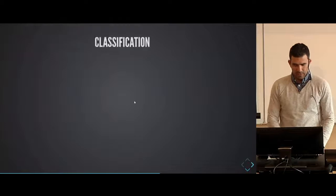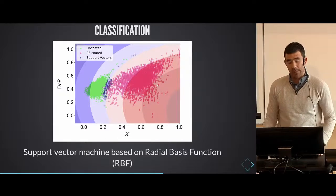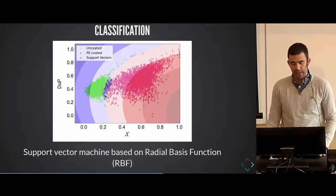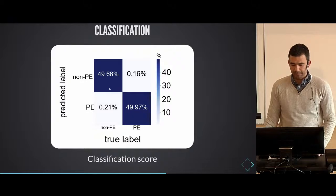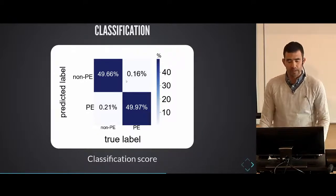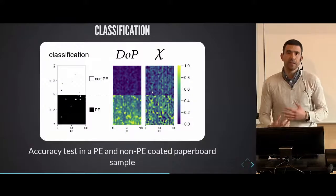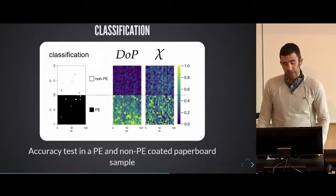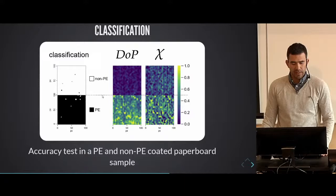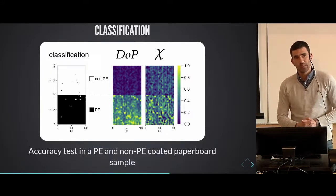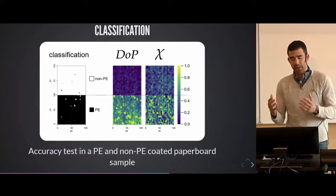With this approach, we fed our classifier based on a support vector machine, which uses a non-linear function to optimize and find the best margin separation between the classes. This resulted in a highly accurate experiment where less than 0.5% of the data was misclassified — using a balanced dataset of PE and non-PE coated samples. Finally, after obtaining our classifier, we used two test samples that had not been used for training. This resulted in a high-accuracy classification of both materials. A few pixels were misclassified, which we can understand from the data distribution where some overlap exists.